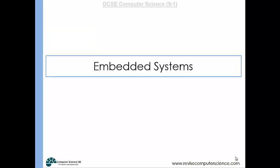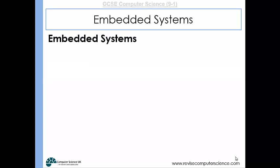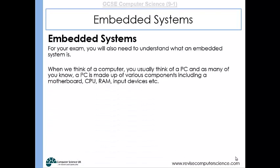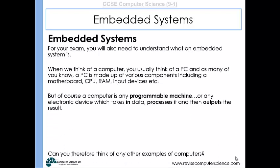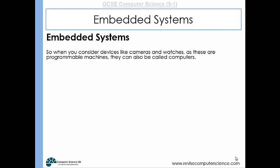The other thing you need to know about is embedded systems. This isn't directly related to CPU speed characteristics, but embedded systems are really important for your GCSE revision. An embedded system — if you think about a PC, you have a motherboard and lots of different components you can add and remove, with input and output devices attached. With an embedded system, you end up with a programmable machine like a PC, but it's really only going to have one or two tasks to do, so you can create a system optimized for just a couple of tasks.